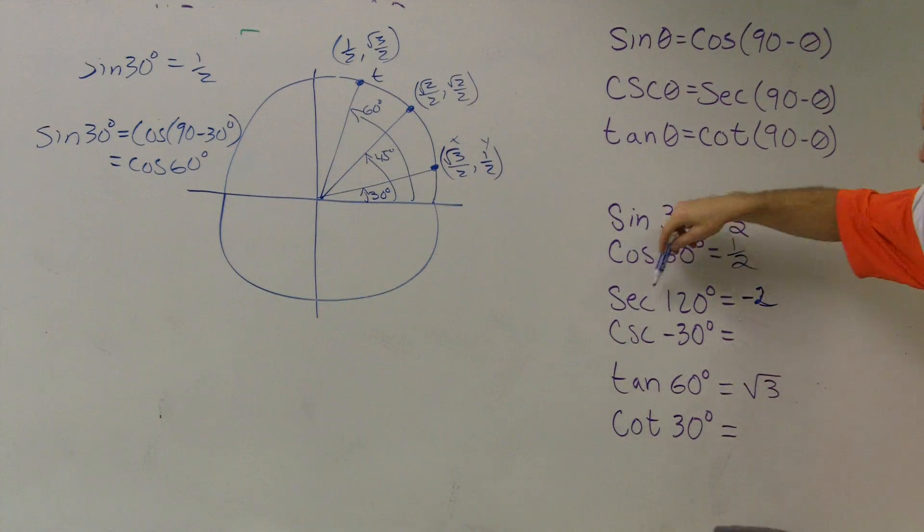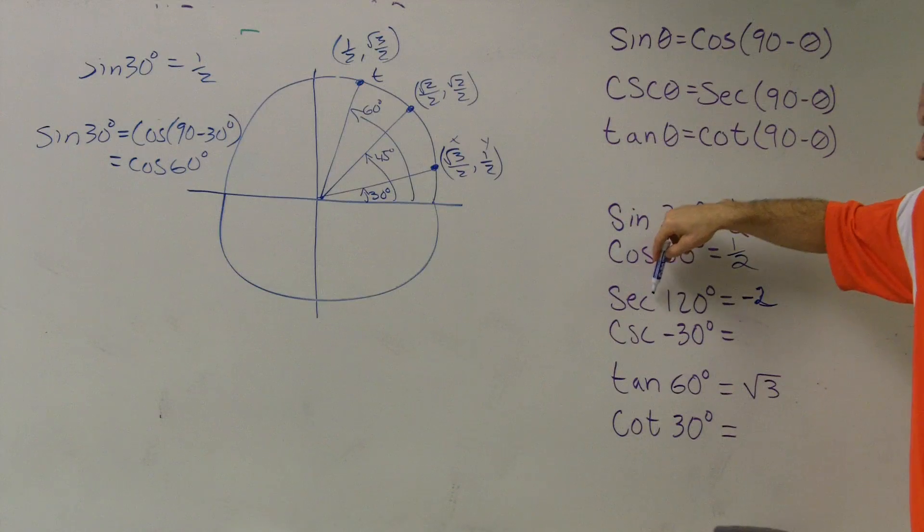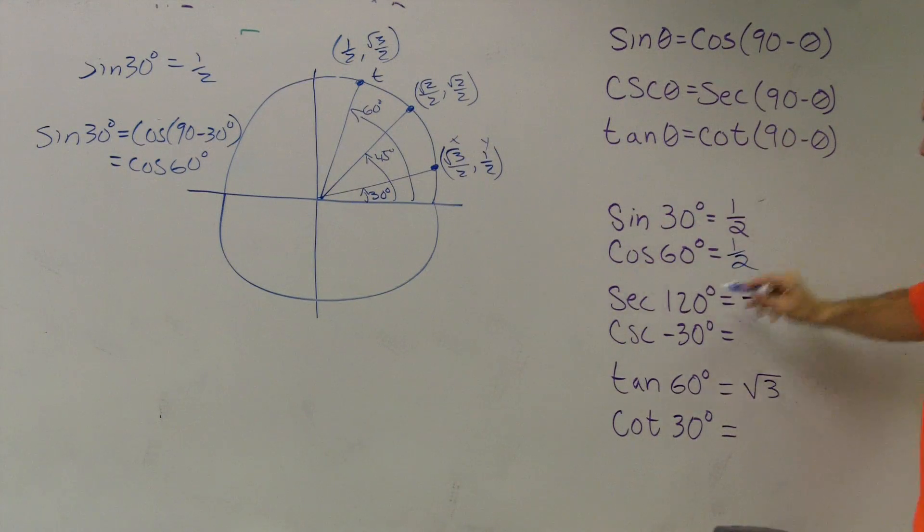Now, so what they're saying is, if I gave you secant of 120 and cosecant of 30 degrees, so if I say secant is 120 degrees, let's take a look at it.